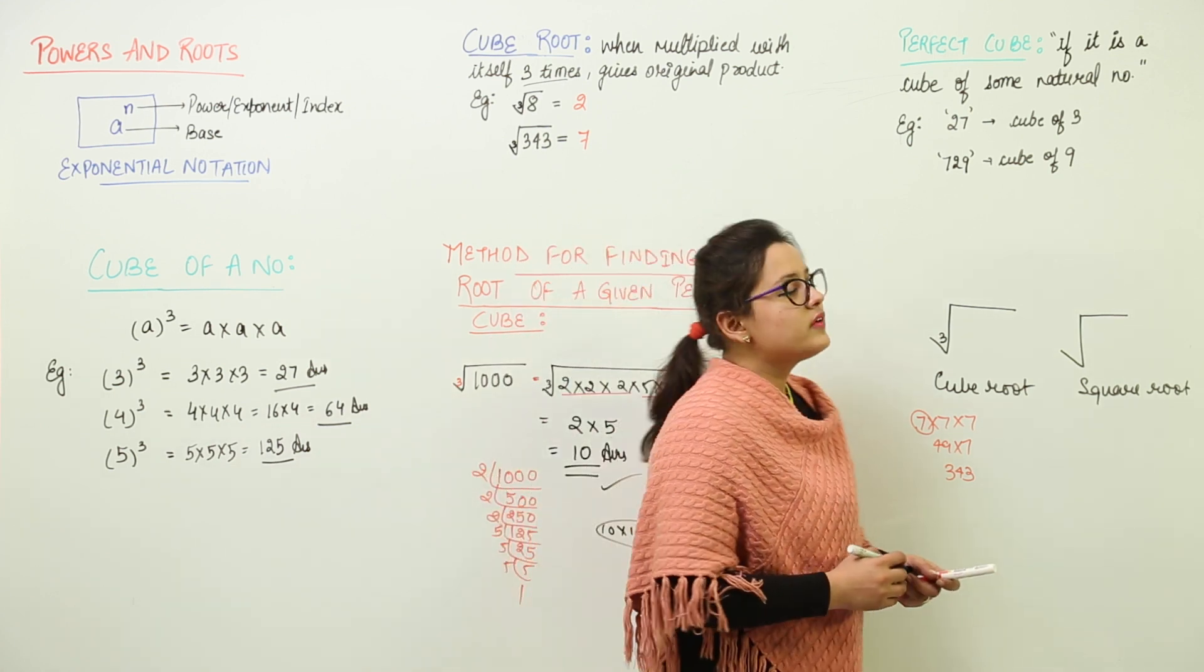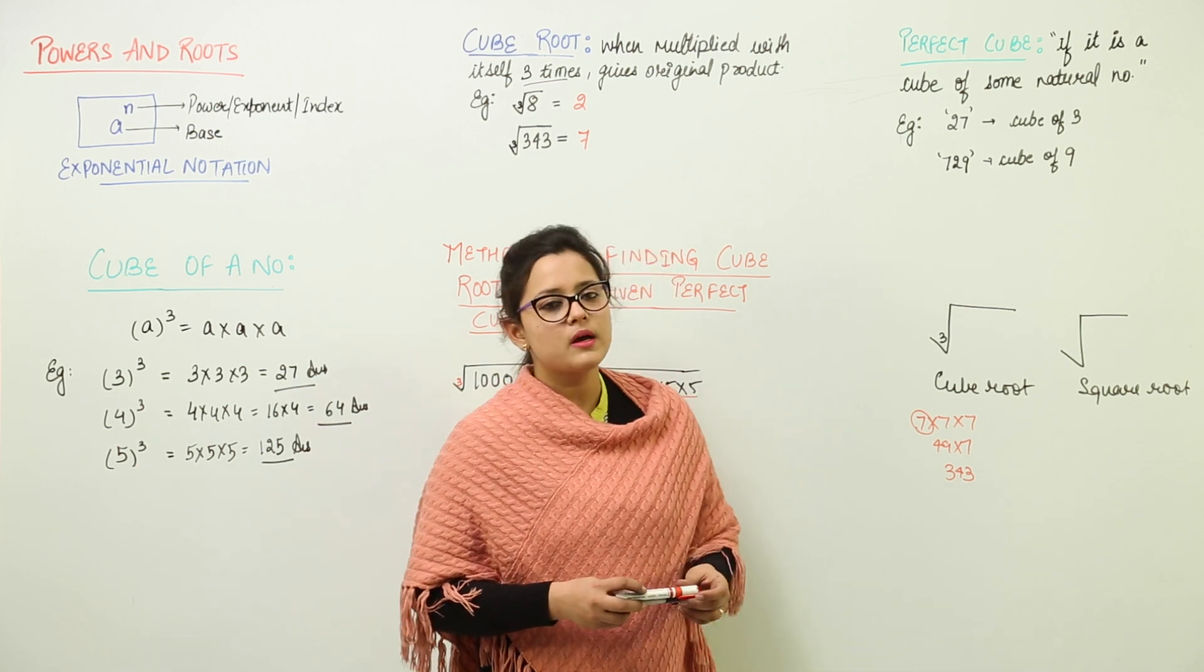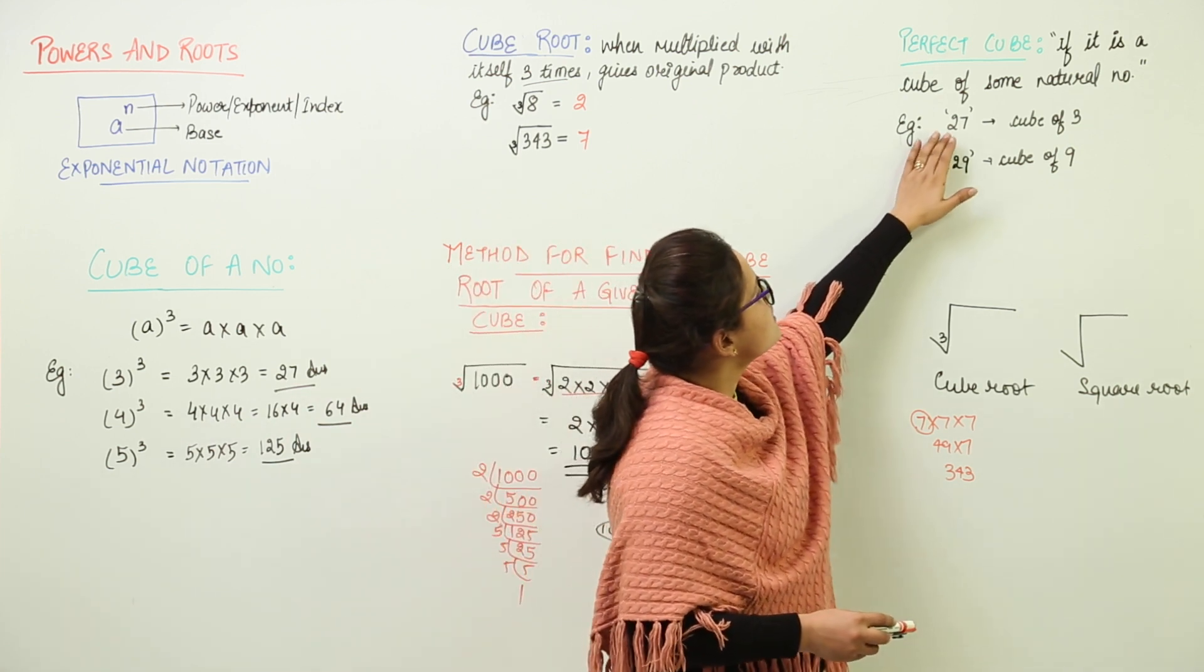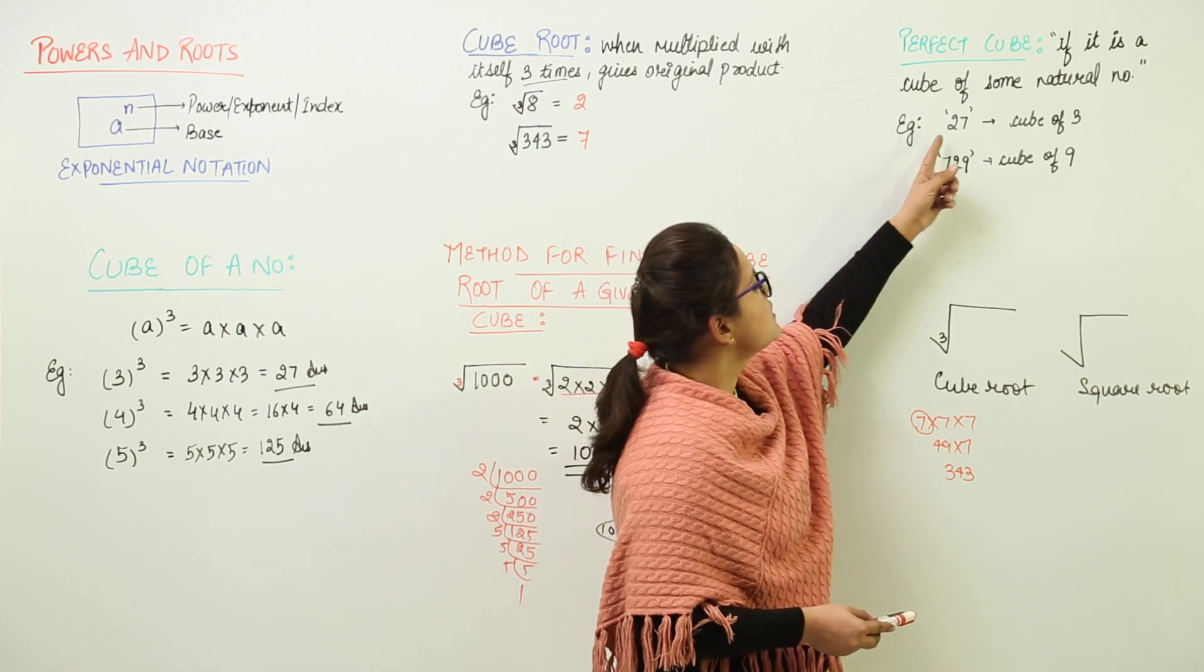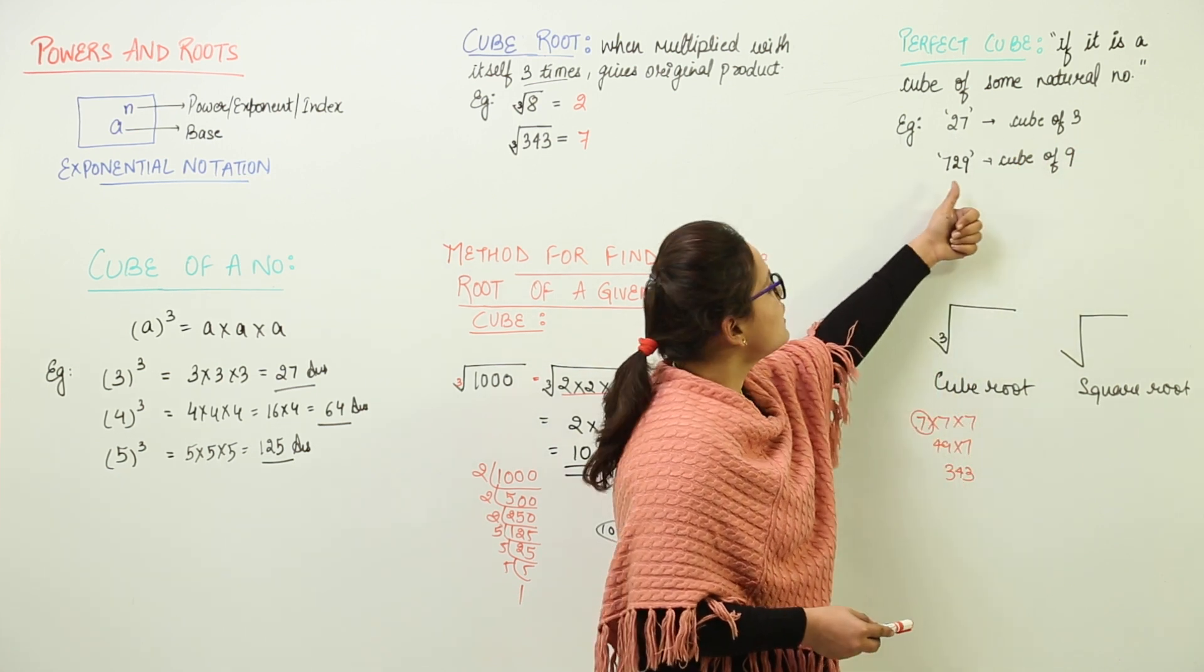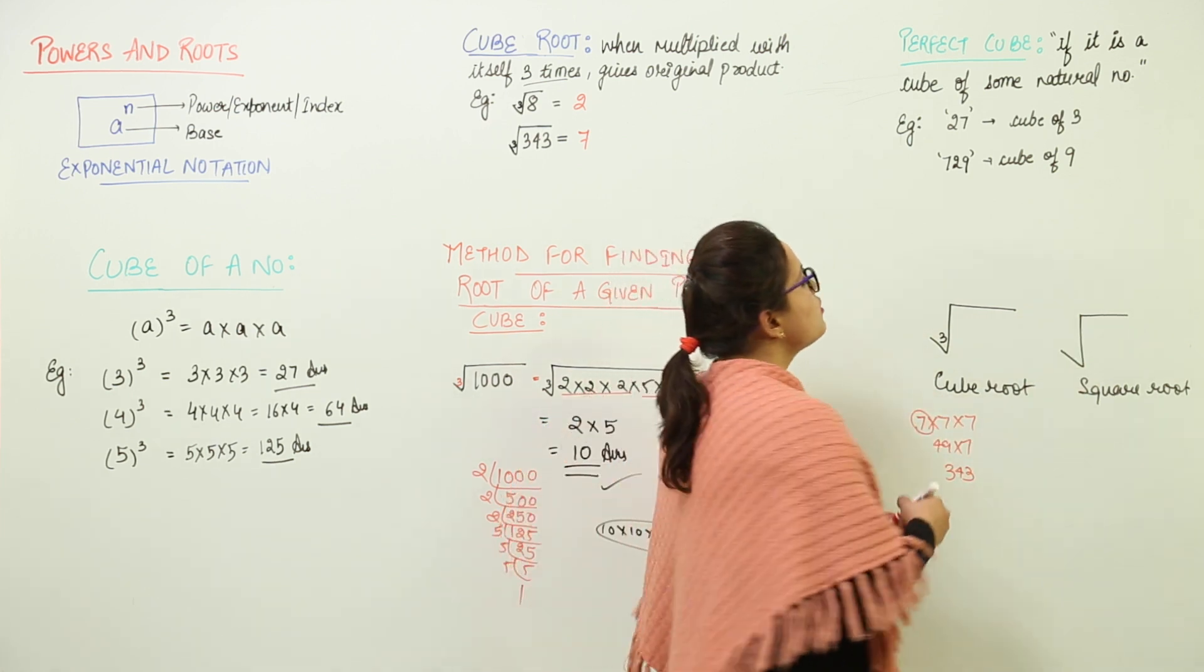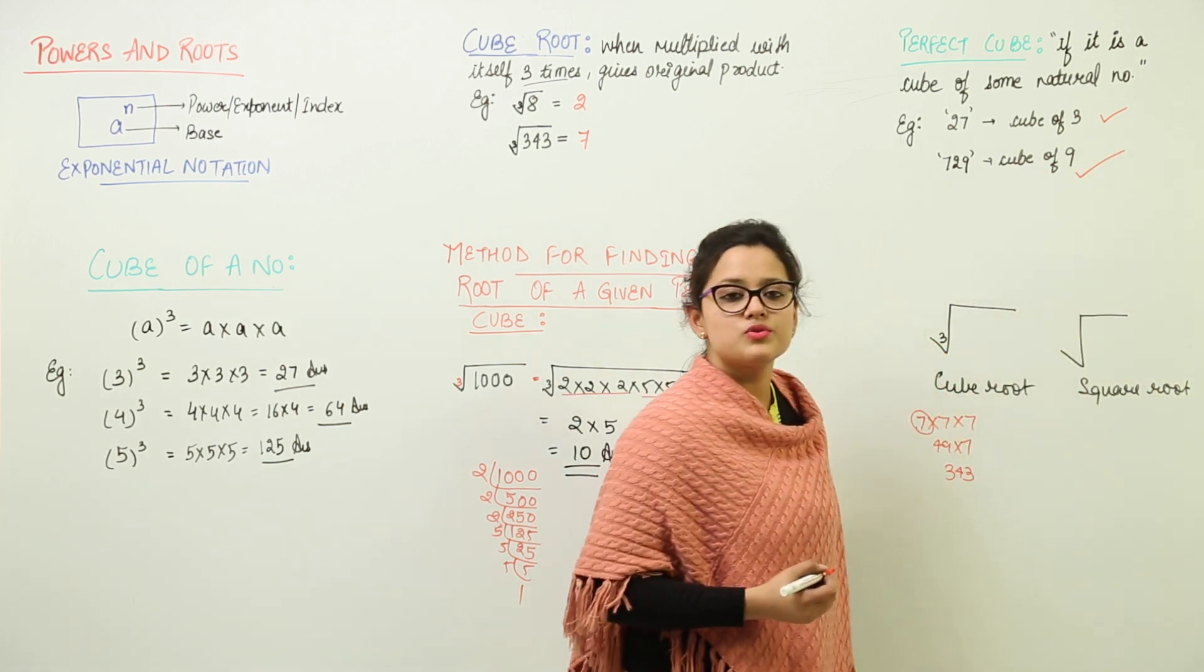Now the last is the perfect cube. How would you come to know whether a given number is a perfect cube or not? What do you mean by a perfect cube? Perfect cube is nothing but if the number is a cube of a natural number. That is for example here we have 27 and you want to check whether 27 is a perfect cube or not. You will just have to check whether it is a cube of a natural number or not. Now 27 is cube of 3 and we know that 729 is cube of 9. Now tell me whether 3 and 9 are natural numbers or not. Yes they are natural numbers. So we say that 27 is also a perfect cube as well as 729 is also a perfect cube.